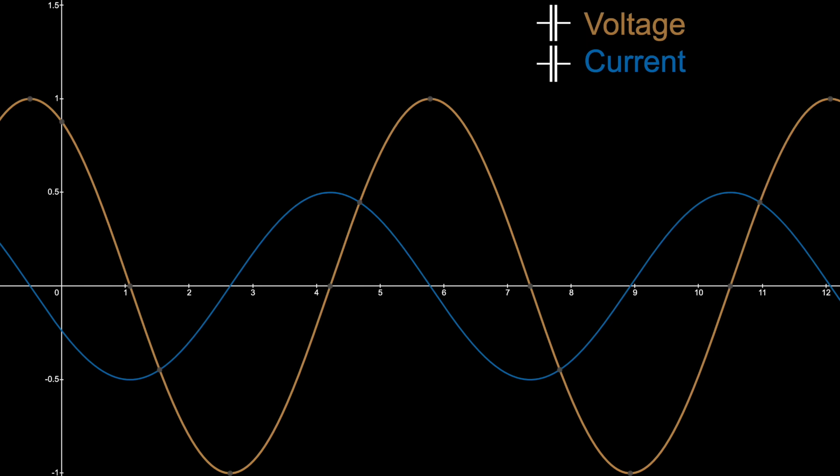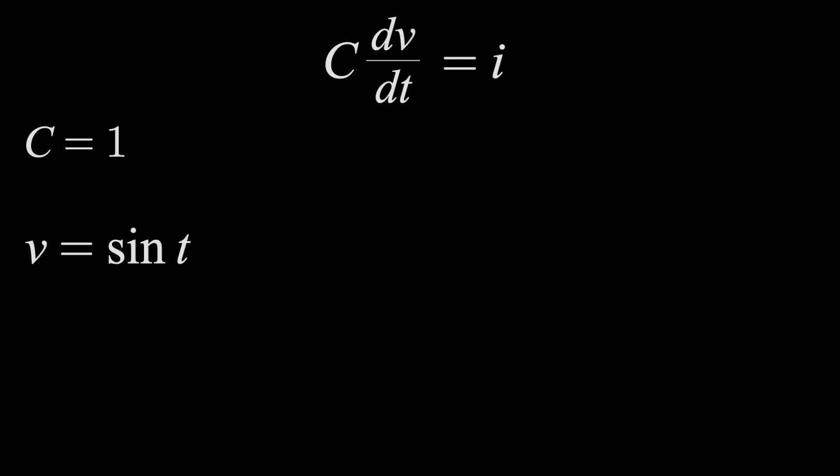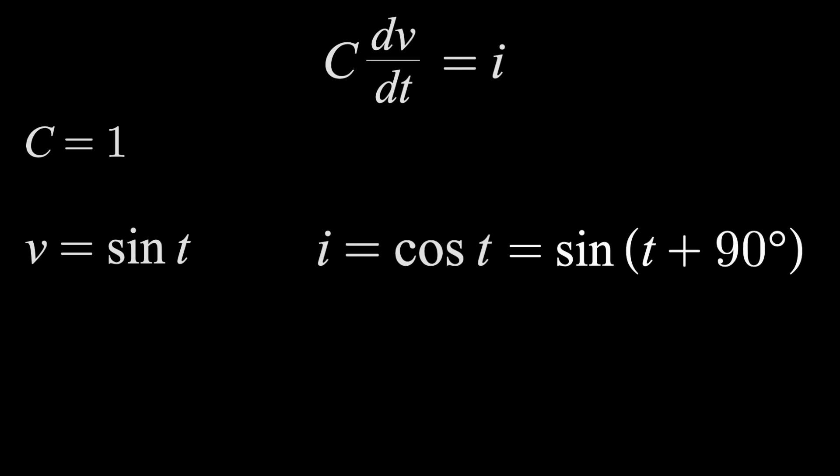And that's found with the capacitor equation. So if I set C to 1 just for simplicity, and the voltage across the capacitor is sine t, then current is cosine t, which can also be written as sine of t plus 90 degrees. So when it comes to sinusoidal inputs, capacitors cause this shift, along with likely an amplitude change. The shift is what we care about, because the math becomes more difficult when you have sinusoids with different phases, even just adding.